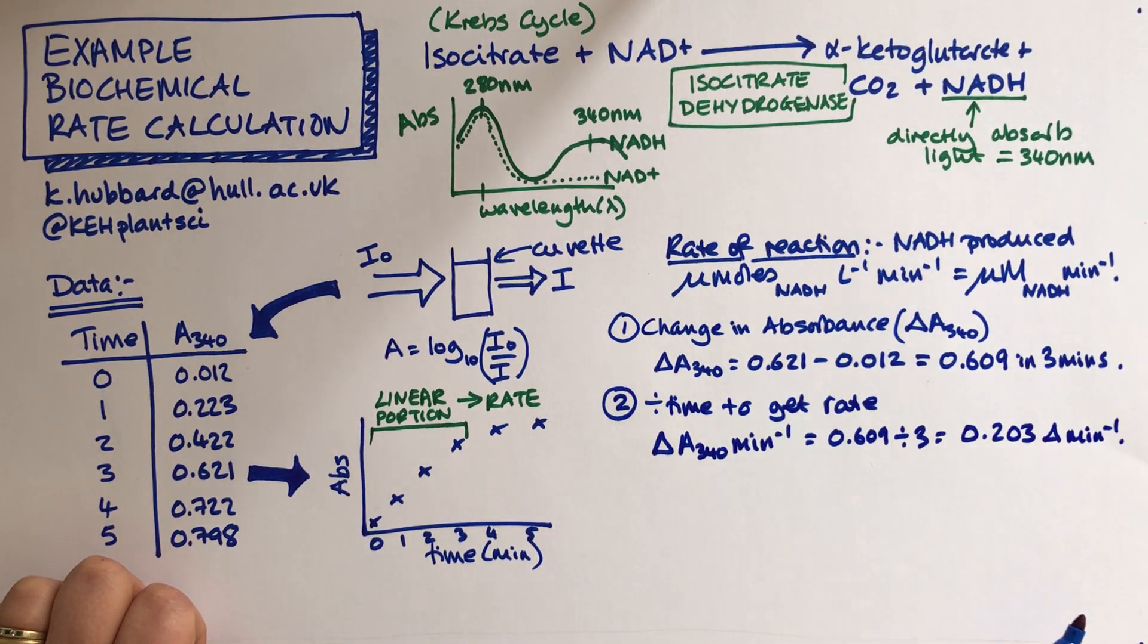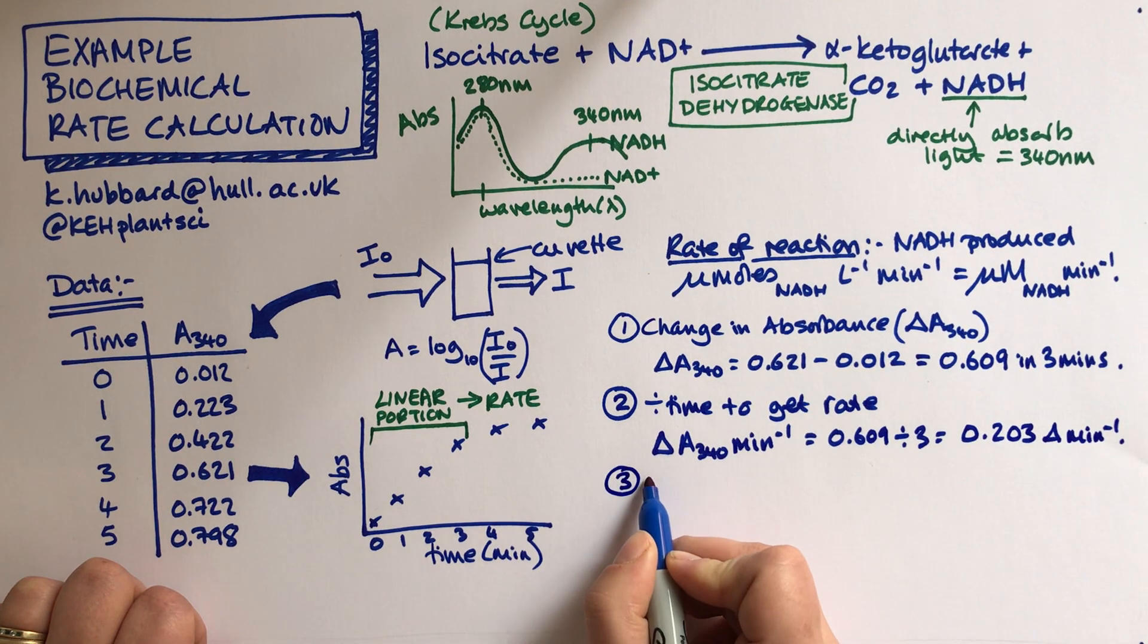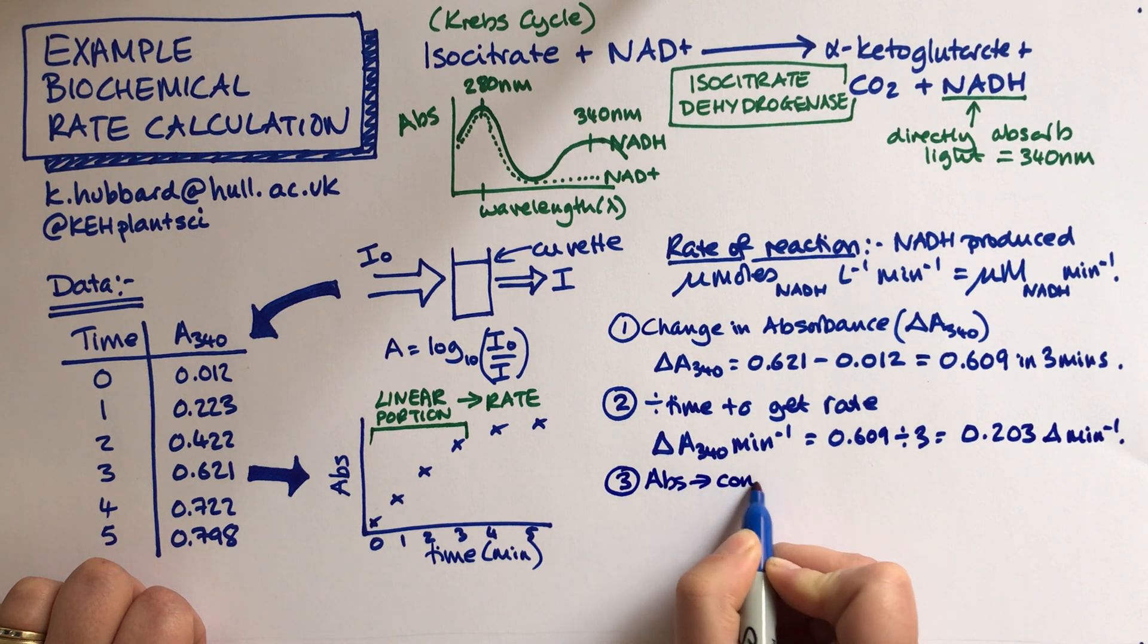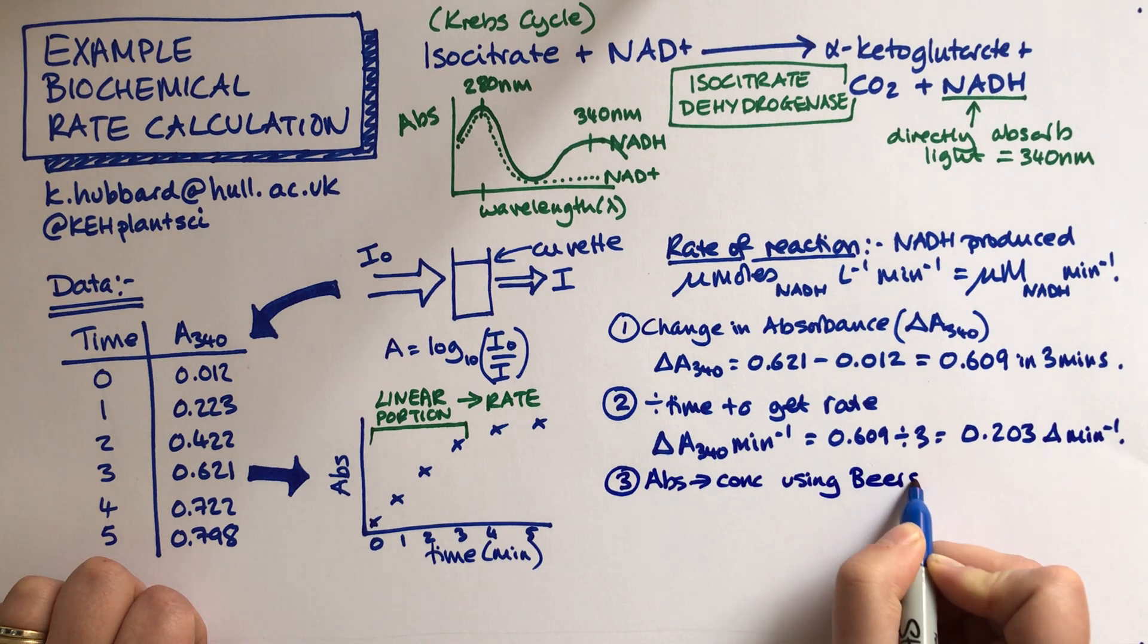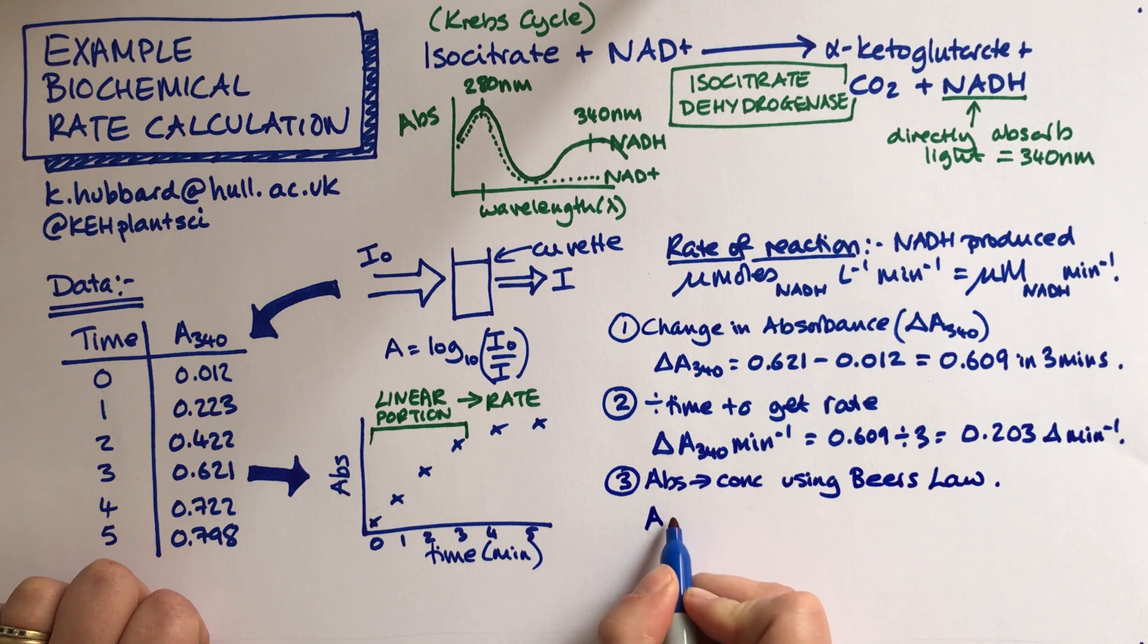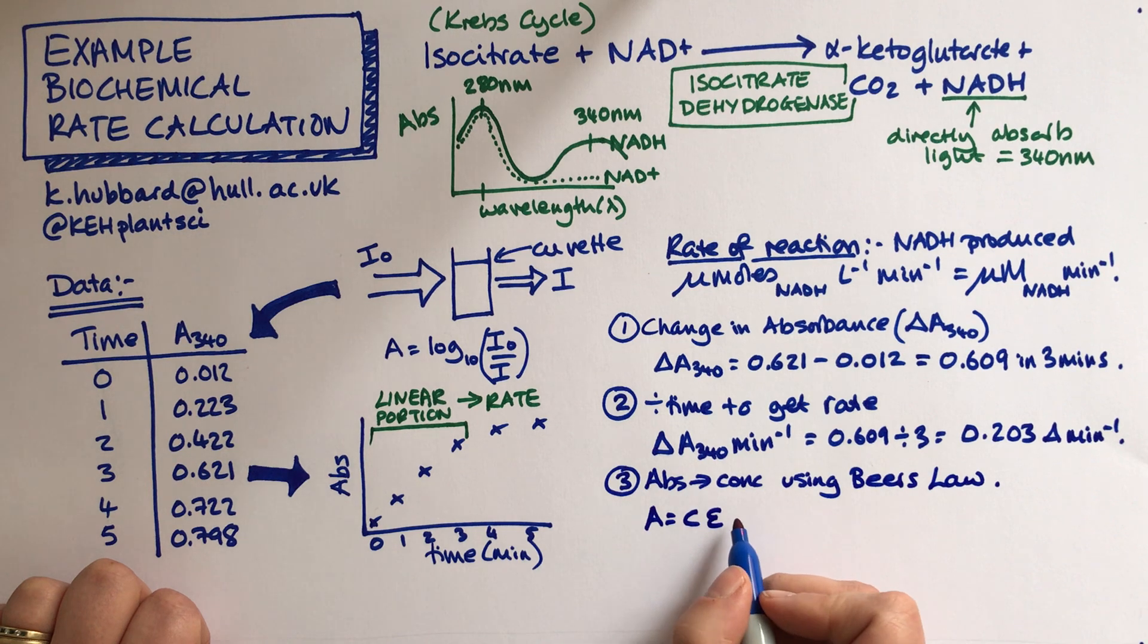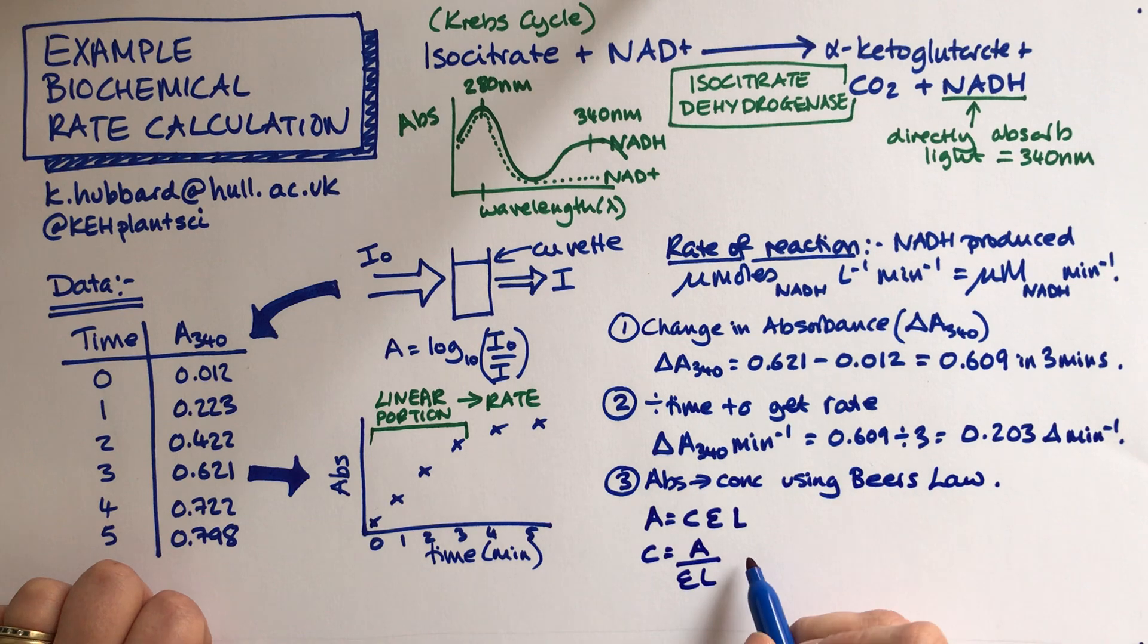So we've got the minutes bit sorted out. Now what we need to do is to go from absorbance to concentration using Beer's Law. So Beer's Law says that absorbance equals concentration times by the molar extinction coefficient times by path length. So therefore concentration is going to be absorbance over those two things there.